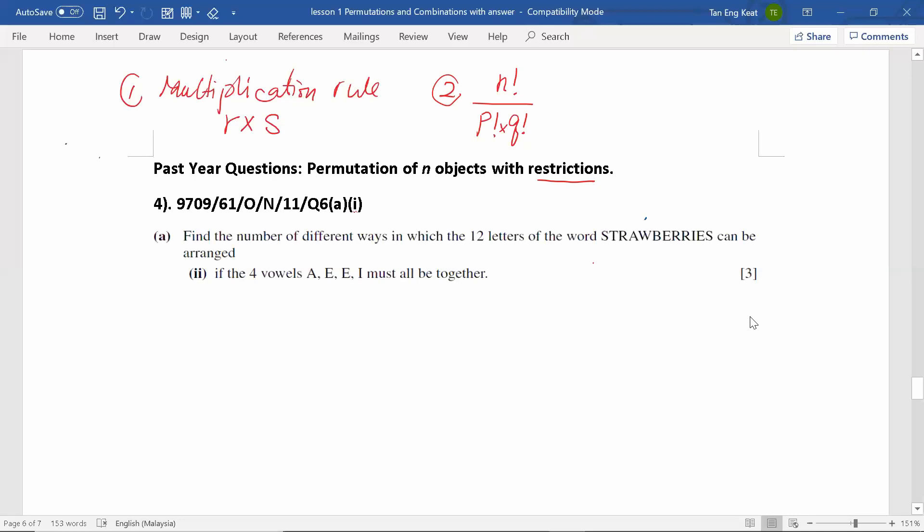Let's look at question 4. This is a question from 2011, November, variant 61. Find the number of different ways in which the 12 letters of the word STRAWBERRIES can be arranged, if the four vowels A, E, E, I must all be together. So this is the restrictions.